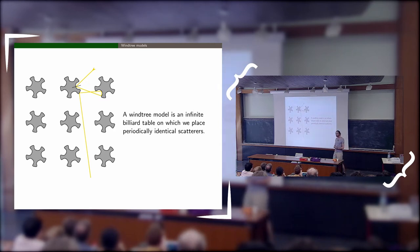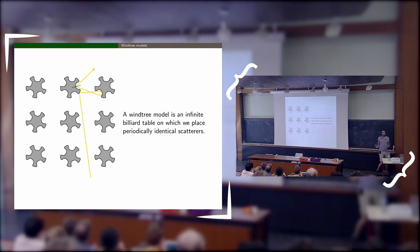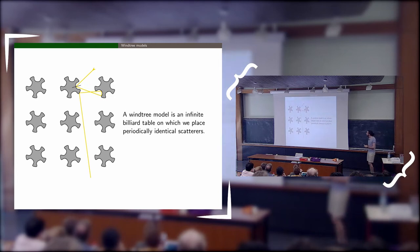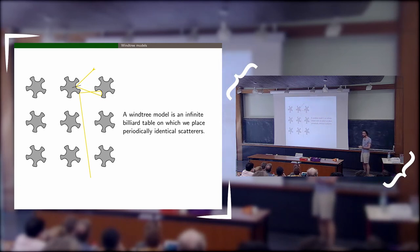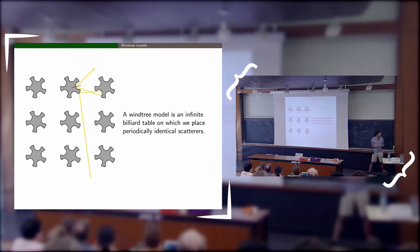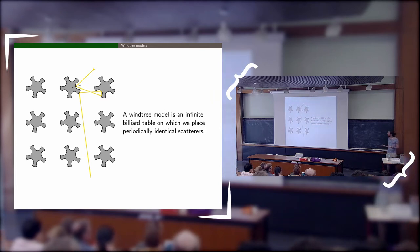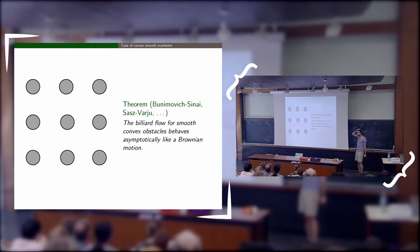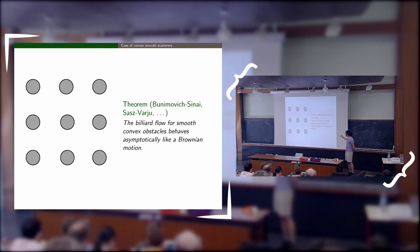This is the object I will study in this talk. This model was introduced, as far as I know, by physicists Paul and Tatiana Ehrenfest to study some statistical mechanics problems. Very little is known about general shapes of obstacles, but the problem has been widely studied during the 20th century in the case of convex and smooth obstacles — for example, circles — by many mathematicians around the Sinai school of mathematics.